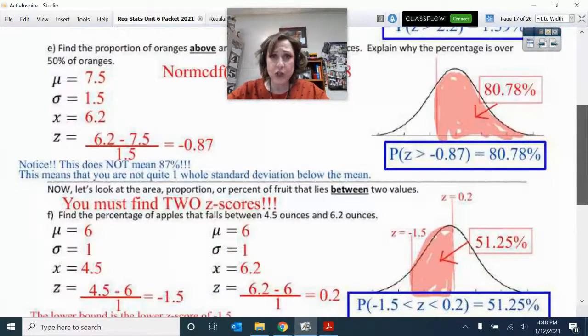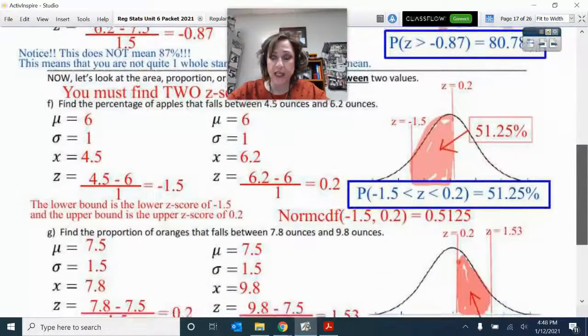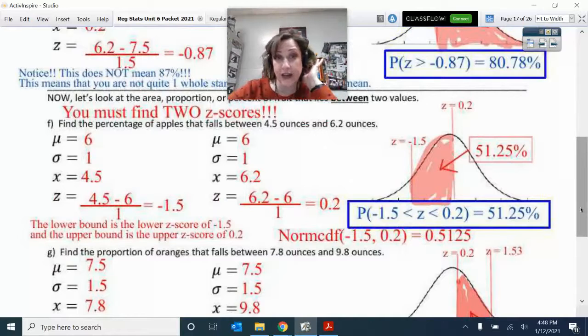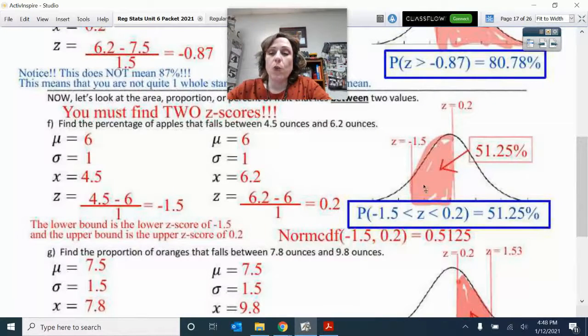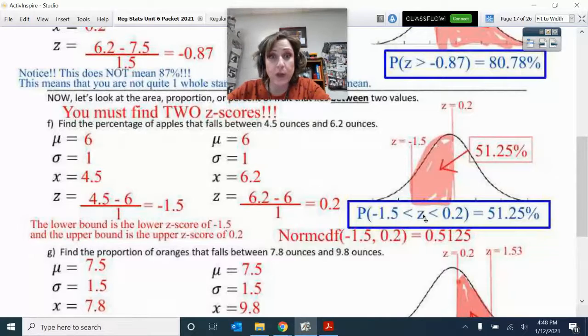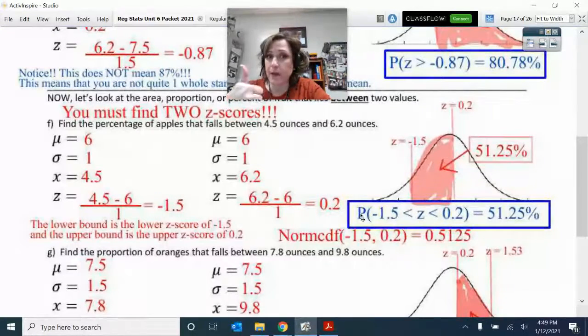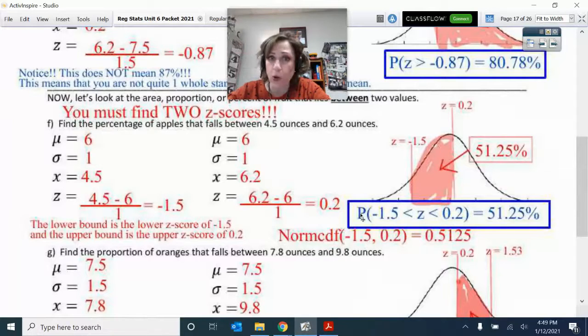When I want to go in between these two Z scores, I need to put my Z in between them. Look at the capital P—that stands for probability, percent, or proportion of observations, all the three Ps. So P, and then parentheses,